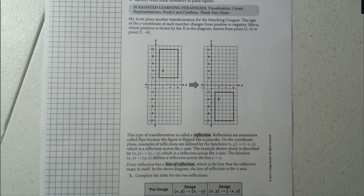The example shown above is described by (x, y) goes to (x, -y), which is a reflection across the x-axis. The function (x, y) goes to (y, x) defines a reflection across the line y equals x. Every reflection has a line of reflection, which is the line that the reflection maps to itself. In the above diagram, the line of reflection is the x-axis.